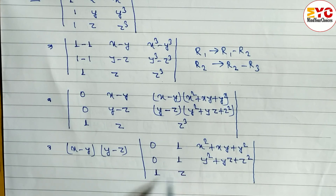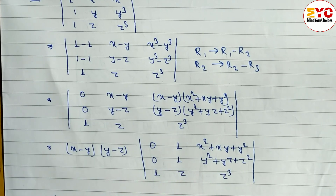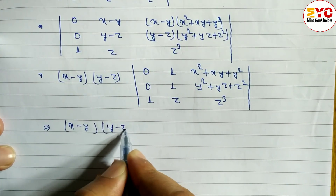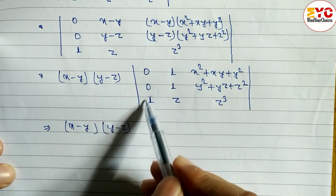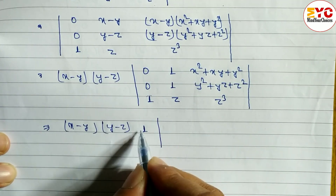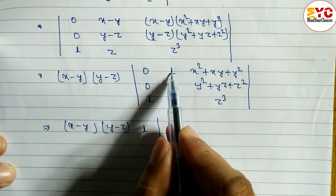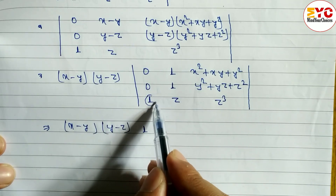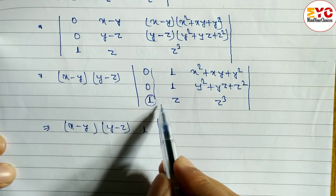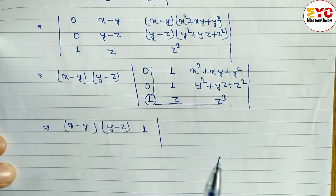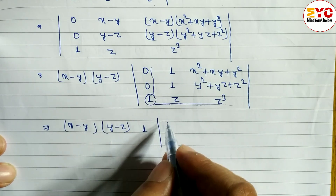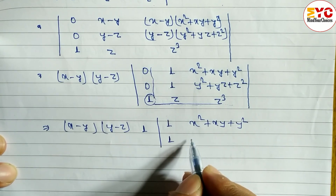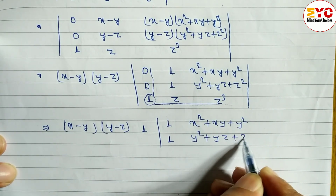The third row remains: 1, z, z³. Now we have two zeros in the first column, so we expand along that column. We take the element 1 from the third row and write down its minor — that is the 2×2 matrix: row one is (1, x² + xy + y²) and row two is (1, y² + yz + z²).